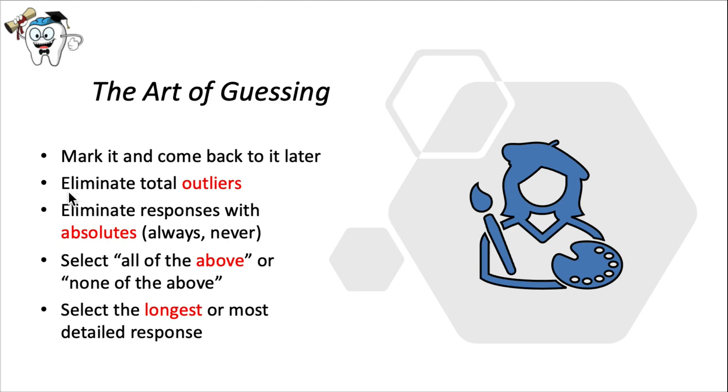The first thing that I came up with is to eliminate total outliers. If an answer choice just has nothing to do with the other ones or just stands out as irrelevant or strange, you can try to eliminate that one as it tends to be more often incorrect than correct.